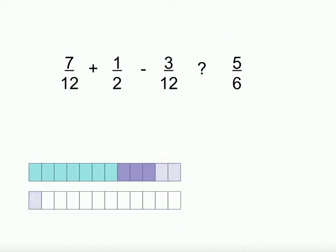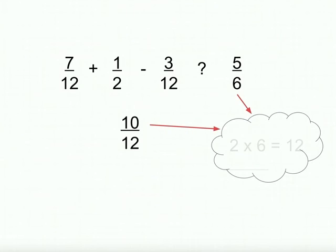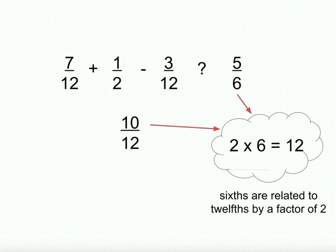Then we need to take away three-twelfths, so our final answer is ten-twelfths. Now we need to think about how twelfths and sixths are related. We know that two times six is twelve, so sixths and twelfths are related by a factor of two. If we look at our ten-twelfths and then we remove every second line, we can see that ten-twelfths is the same as five-sixths. So we put an equal sign to make the statement true.